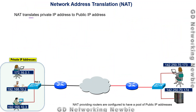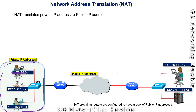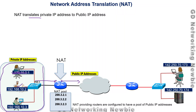For example, a user inside an organization has a private IP address. As long as communication stays within the organization's network, this is fine. But when sending to the global internet, the router — which has a pool of public IP addresses — translates the private IP address to a public one so the packet can be routed to its destination.